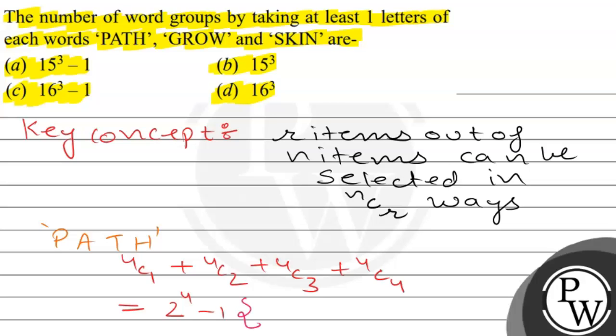This is because nC1 + nC2 + up to nCn equals 2^n - 1.